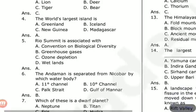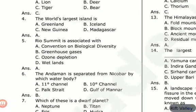The Andaman is separated from Nicobar by which water body? Andaman and Nicobar are two islands in a group. The options are: 11-degree channel, 10-degree channel, Palk Strait, Gulf of Mannar. The answer is B — the 10-degree channel separates the Andaman and Nicobar islands.